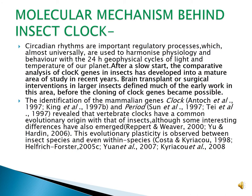Molecular mechanism behind the clock. Circadian rhythms are important regulatory processes which almost universally are used to harmonize physiology and behaviour with the 24-hour geophysical cycles of light and temperature. The comparative analysis of clock genes has developed significantly, and the identification of the mammalian genes Clock (1996) and Period revealed that vertebrate clocks have a common evolutionary origin with those of insects.